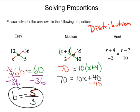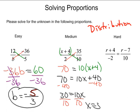Let's subtract 40 from both sides: 30 equals 10x. Divide both sides by 10, and that gives us x equals 3. Right when we get past that first step of distribution, it's relatively easy — it's just a two-step equation.